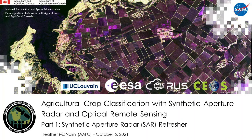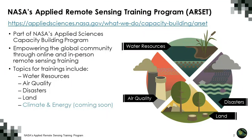Today's session is a refresher on synthetic aperture radar touching on specific aspects related to agriculture. Our guest speaker is Dr. Heather McNairn from Agriculture and Agri-Food Canada. NASA's RSET program is part of the Applied Sciences Capacity Building program, and the goal is to empower the global community through online and in-person remote sensing trainings. We have four thematic areas: water resources, air quality, disasters, and land.